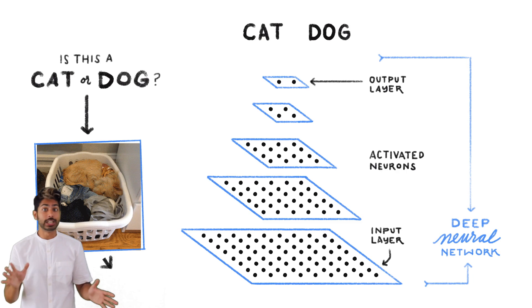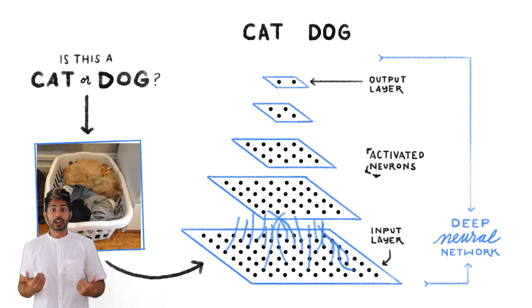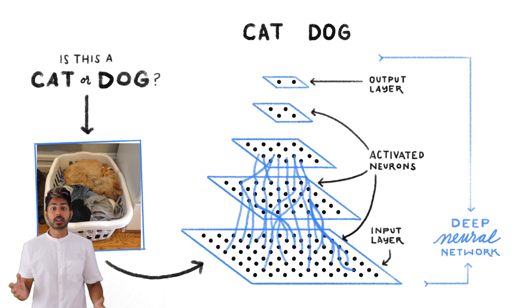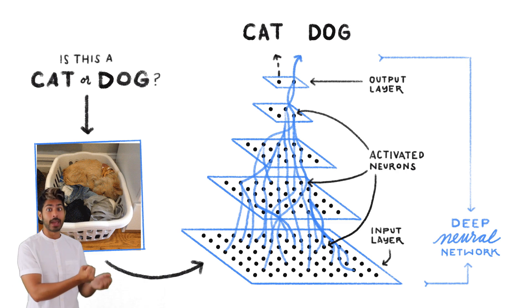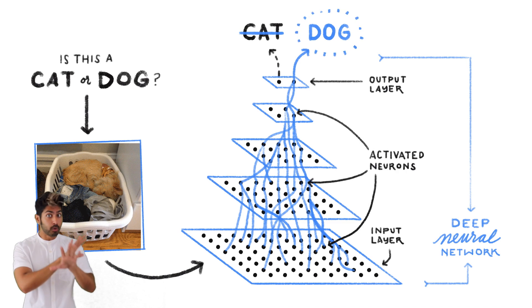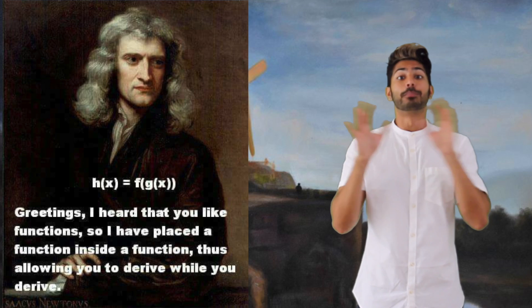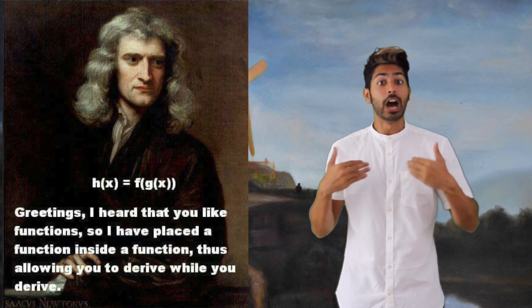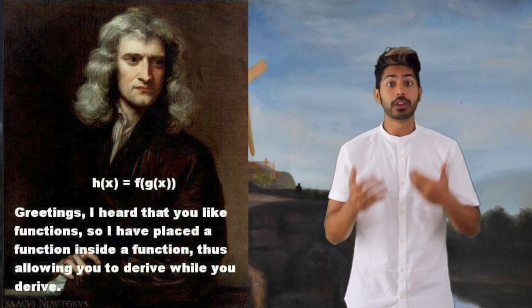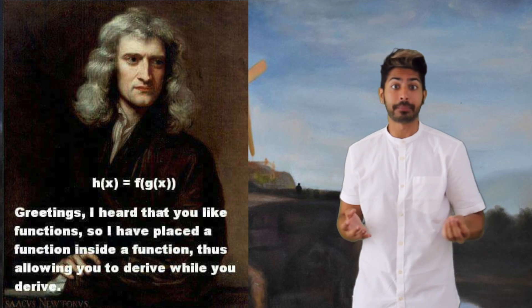No matter what machine learning model we use, no matter what dataset we use, the goal of machine learning is to optimize for an objective. And by doing so, we are approximating a function. The process of optimization helps us iteratively discover the functions hidden in the depths of data.